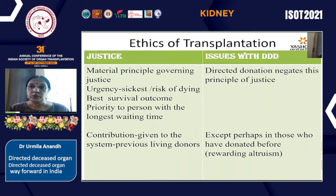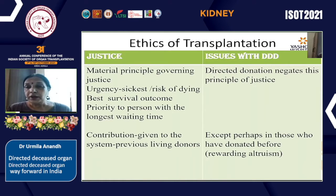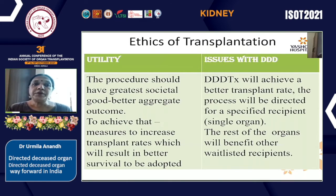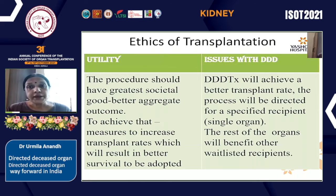Priority is also given to the person with the longest waiting time, and in some programs organs are given to previous living donors. Directed donation actually negates the principle of justice, except in a situation of directed donation to a previous living donor, where you are rewarding past altruism. The principle of utility mentions that the procedure should have the greatest societal good and the best aggregate outcome. Directed deceased donor transplant programs may achieve this because they will improve consent and transplant rates.